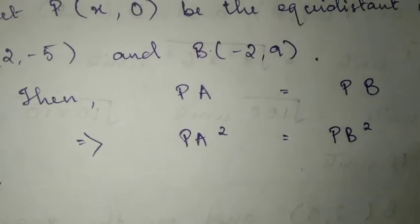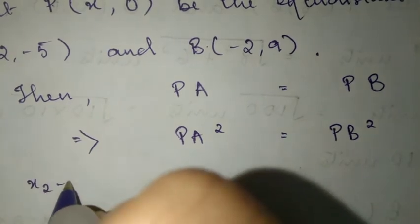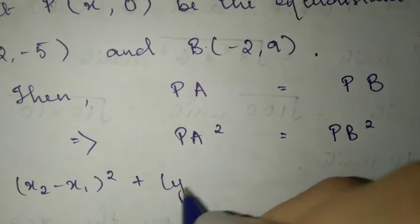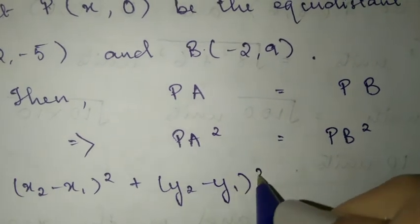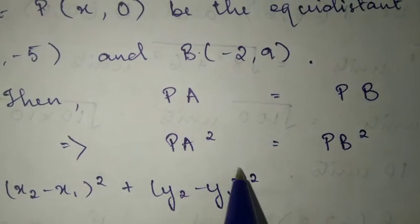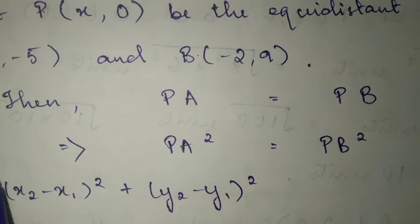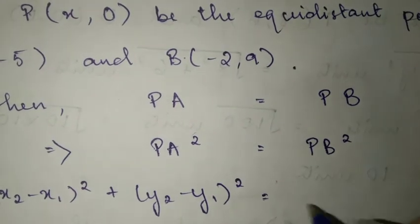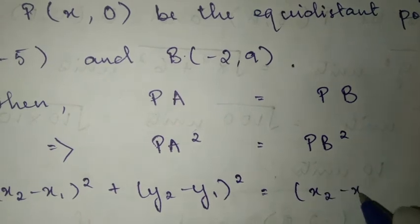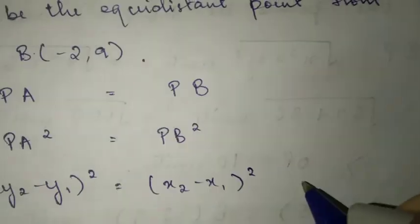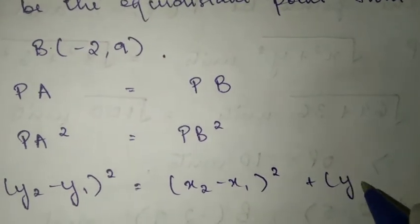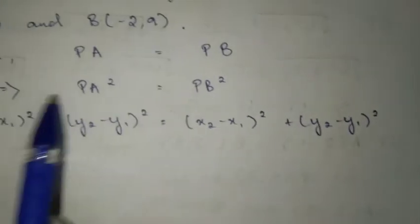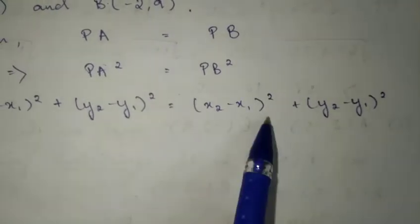PA squared, the formula will be (x2 - x1) whole square plus (y2 - y1) whole square. We squared it, so the square root cancels. Similarly, PB will have the same formula. It's not necessary if you can do it directly without this, then it's fine.